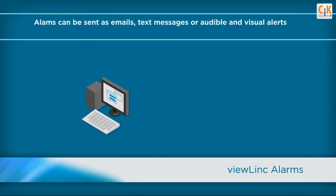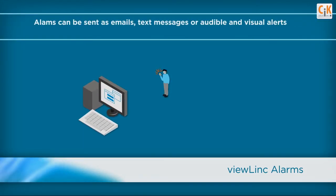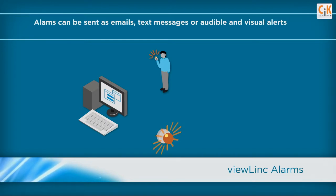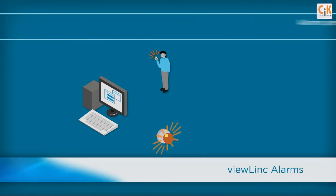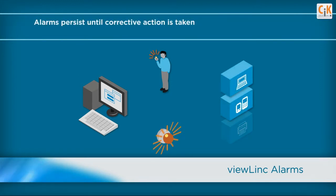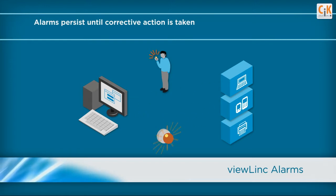Designate personnel to receive alerts according to their schedules. ViewLink alarms can be sent as emails, text messages or visual alerts. And alarms can be enunciated with external buzzers, flashing lights and voice dial-out. Alarms will persist until corrective action is taken and can also be automatically escalated to notify other designated personnel.